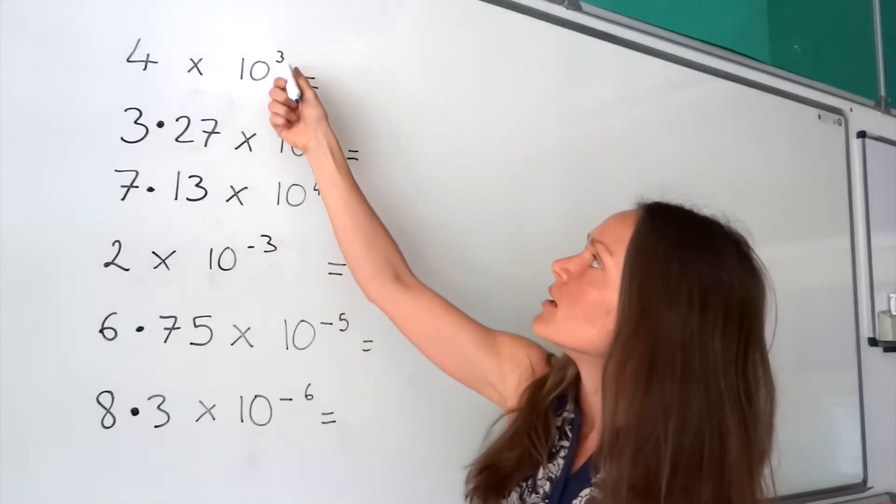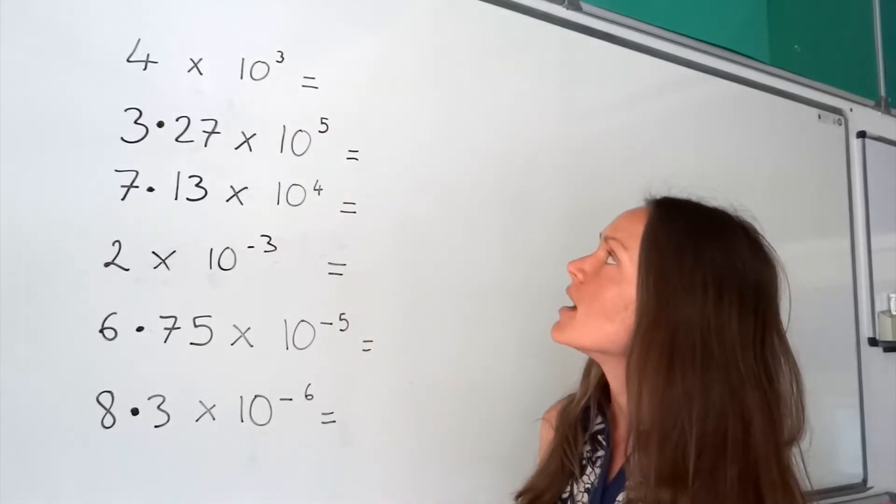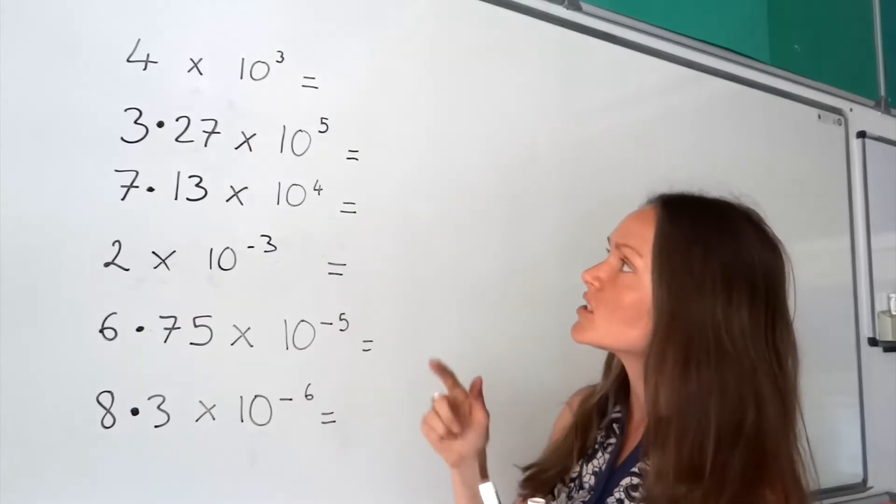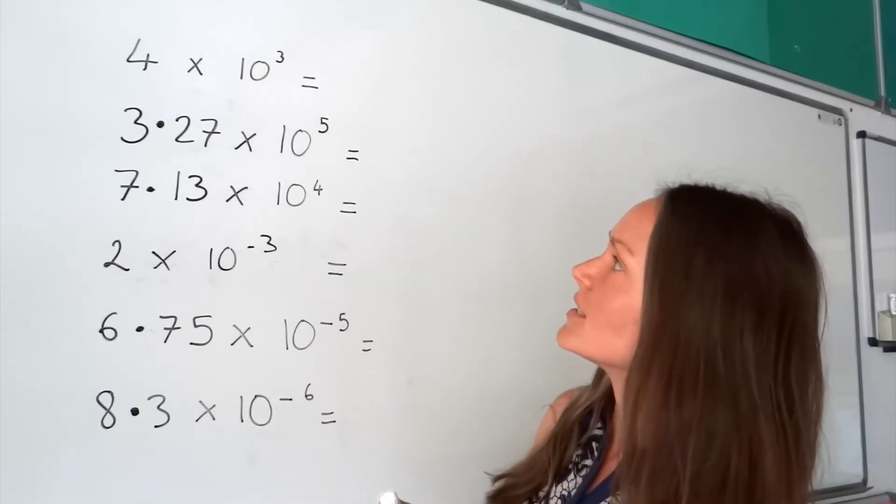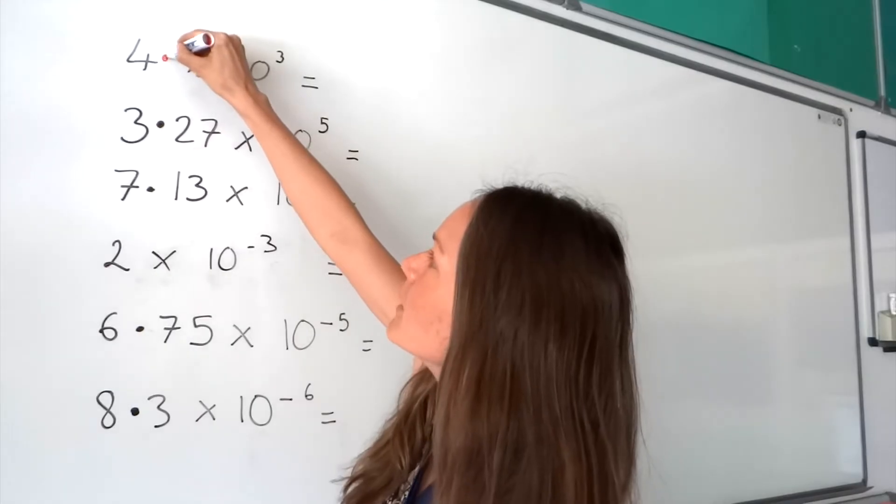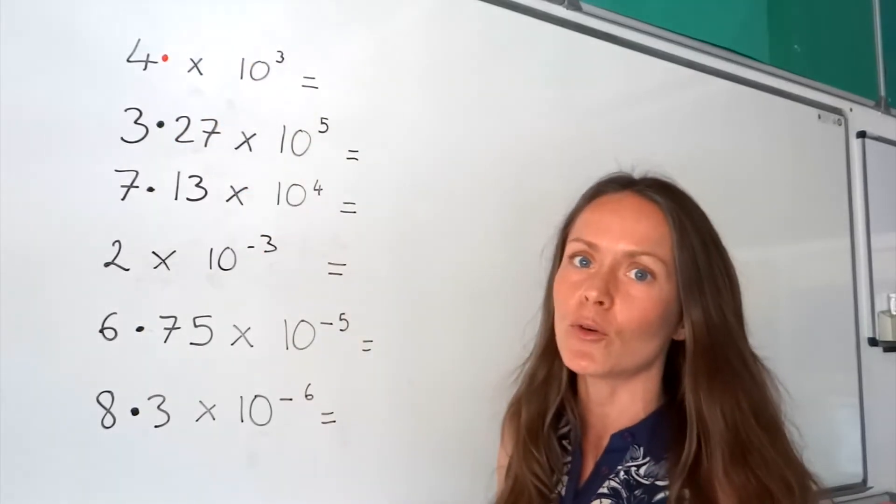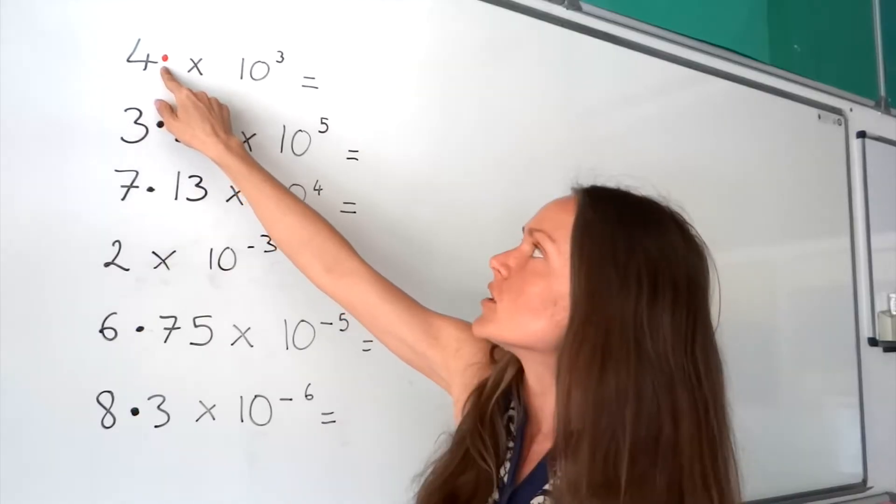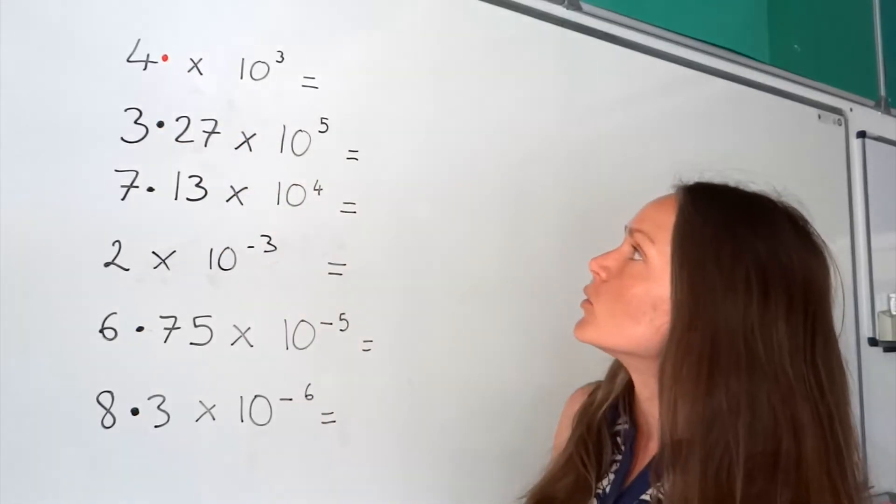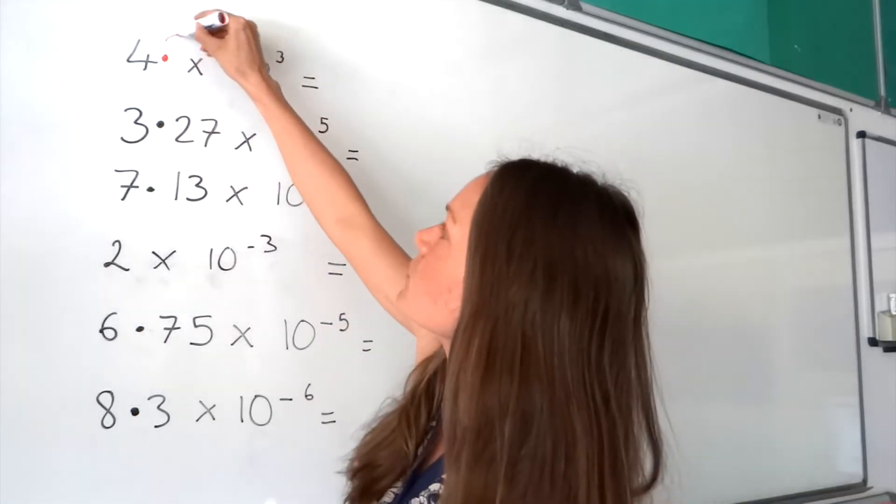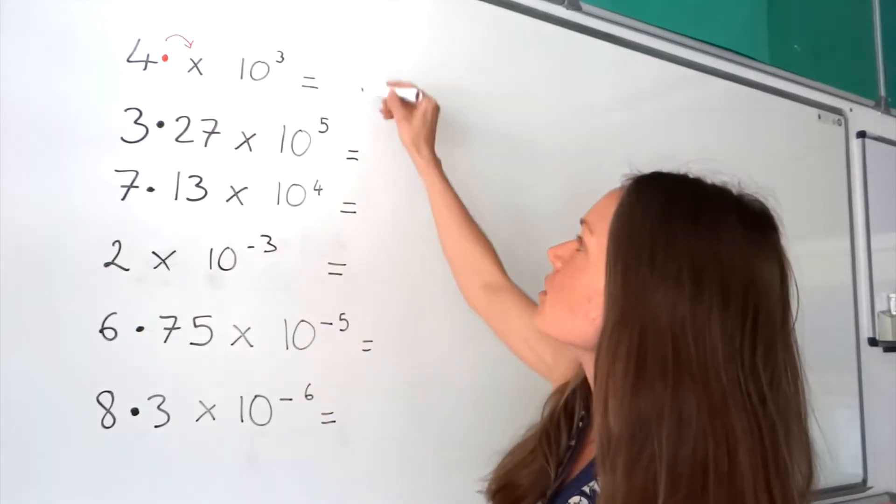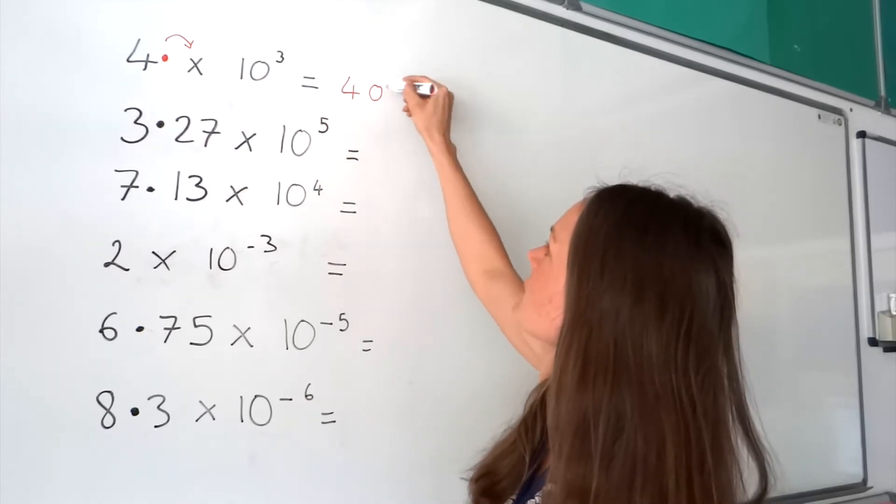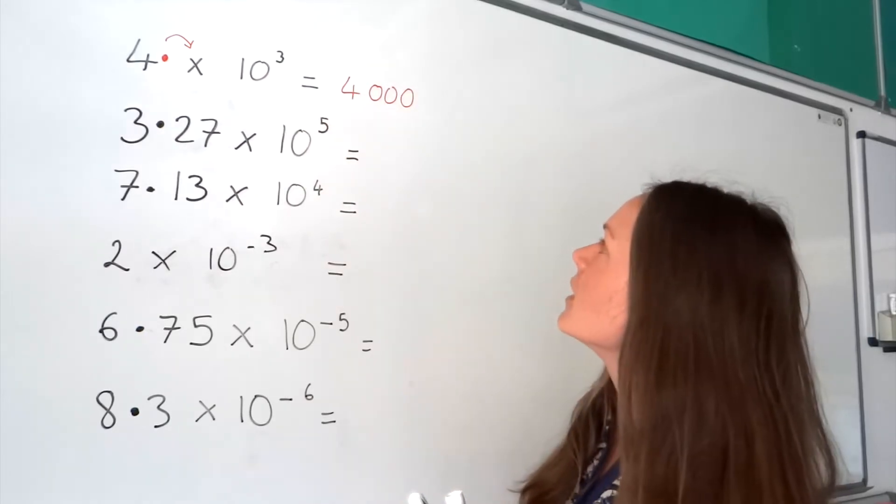So in the first one, the power is positive 3. That means the decimal has to move three places. The decimal, at the moment, is here. We don't normally write 4.0, but we just have to remember that the decimal is just after the digit 4. So that decimal is going to move three places to the right, so that the number gets bigger. There are no numbers here, so when that happens, we just add in zeros.